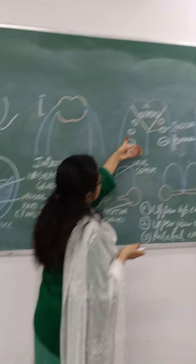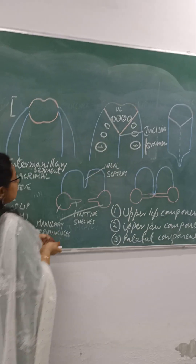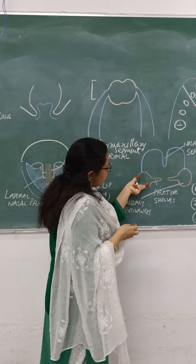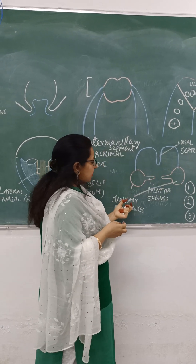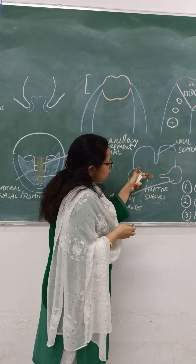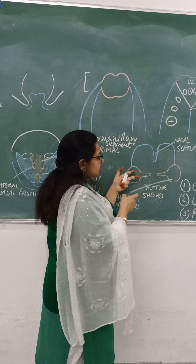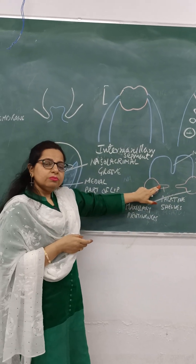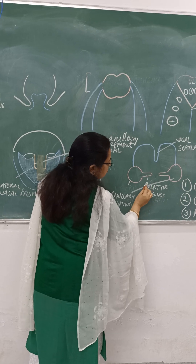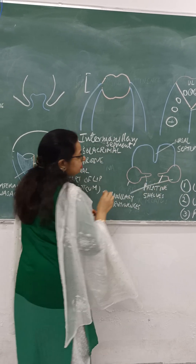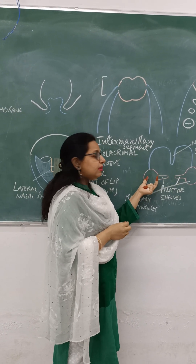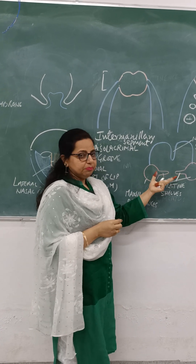Posteriorly, there is a different structure. This structure comes from the maxillary prominences. The two maxillary prominences give rise to shelf-like projections growing towards the midline, which have been named palatine shelves. These two palatine shelves are paired structures coming from the medial portion of the maxillary prominences on either side.